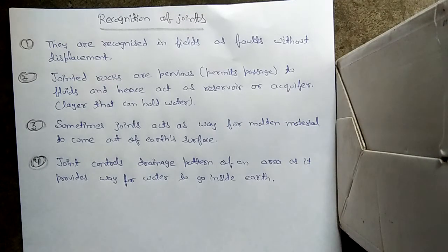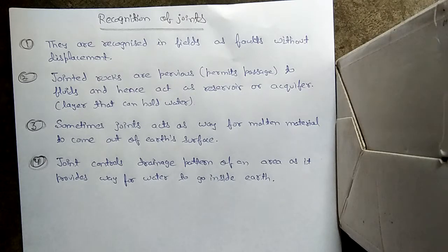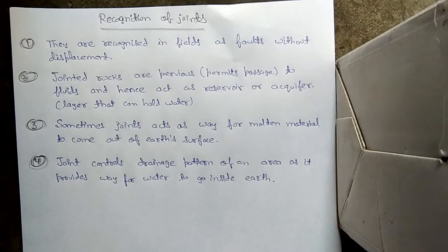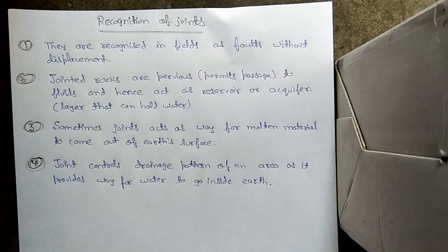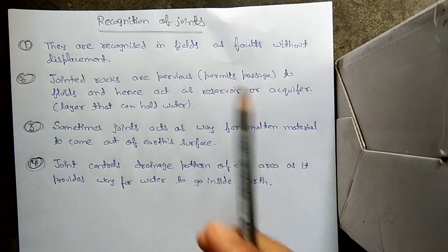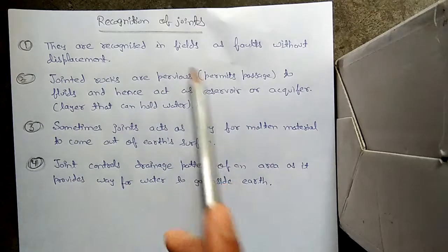Hello friends. In this video we are going to discuss the recognition of joints — how to recognize joints. The first way they are recognized is in fields as faults without displacement. The places where faults are found, joints are also found there, but without displacement — those are joints.